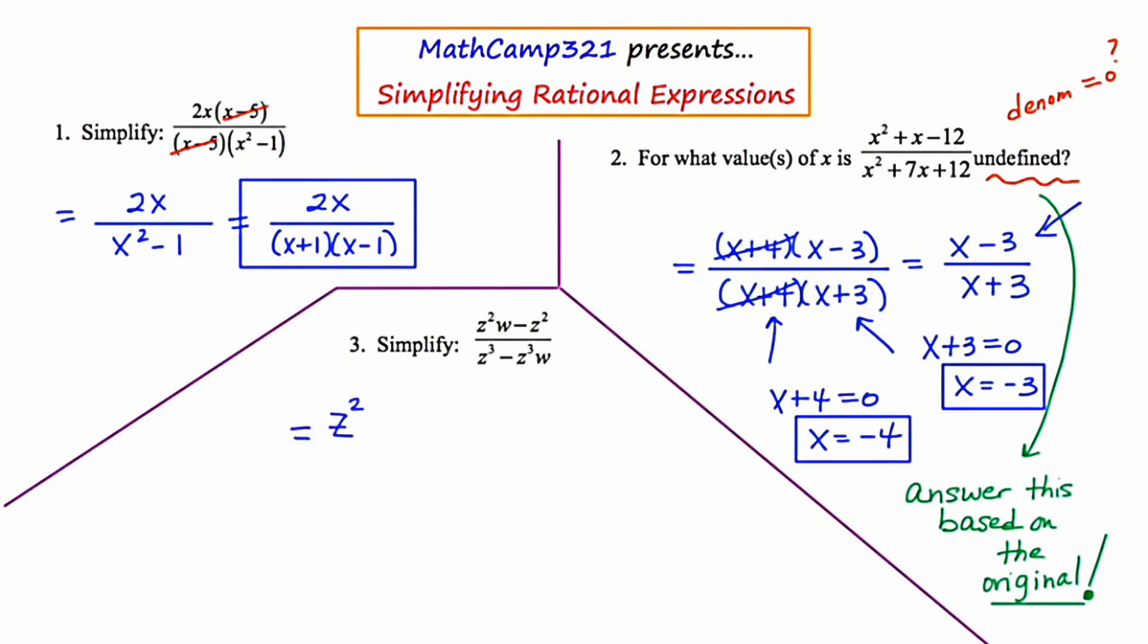So I'm looking at the numerator and I'm going to factor this by removing the greatest common factor z squared. If I remove or factor out a z squared, I'm left with w minus 1. Now as I focus in the denominator, I can take out a z cubed. And if I take out a z cubed, I'm left with 1 minus w.